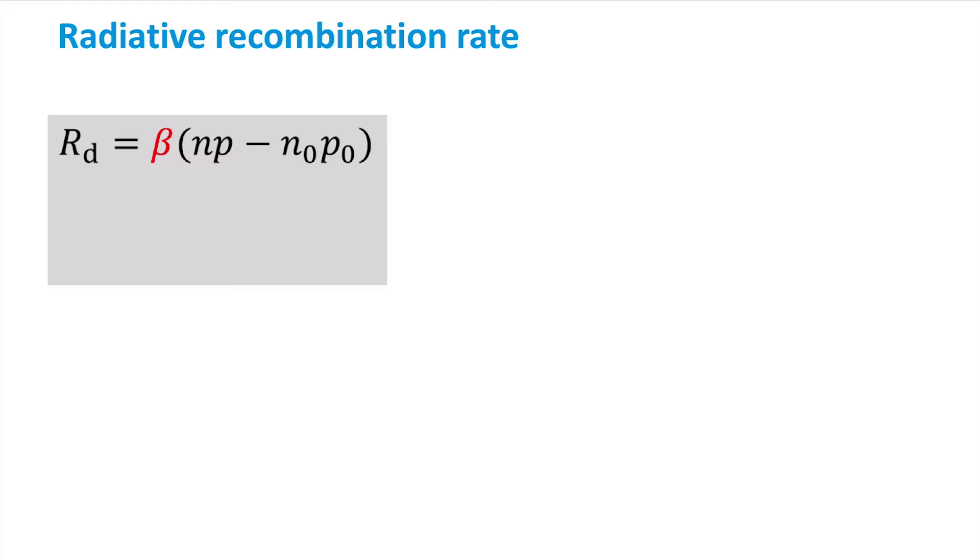Beta in this equation is a proportionality factor and is material dependent. Depending on the illumination conditions and on the material parameters, this expression can be simplified.